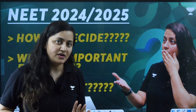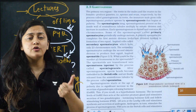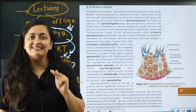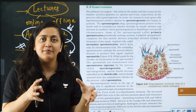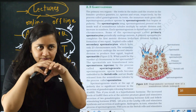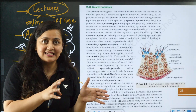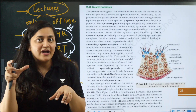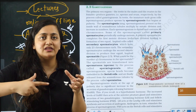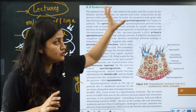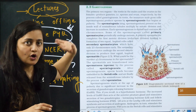We know that for biology, chemistry, and physics, NCERT is very important. When it comes to biology and chemistry especially, questions are going to come directly from the NCERT. Physics is also NCERT-based, but in biology and chemistry there are many theoretical things, so we need to know what is important and what is not. Here you can see a snip from the Class 12th NCERT — the topic is human reproduction, specifically gametogenesis.